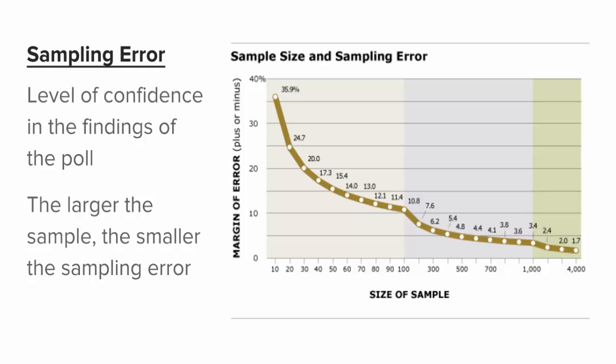A small sampling error is good as it indicates a high level of confidence in your findings. The strongest polls typically poll between 1,000 and 1,500 people. Compared to the total population in the United States, that may seem small, but it's enough to allow pollsters to get an accurate feel and puts our margin of error at 2.4 to 3.4 percent, well within the acceptable range.